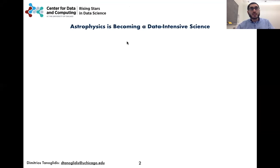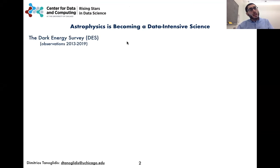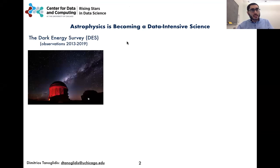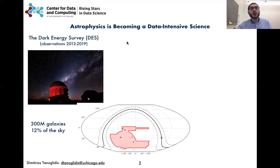Astrophysics is becoming more and more a big data science. Instead of focusing on individual objects, astronomical surveys map large parts of the sky collecting information for hundreds of millions of objects. Take the Dark Energy Survey for example, led by scientists here at the University of Chicago and Fermilab. It has observed 300 million galaxies and mapped 12 percent of the sky.